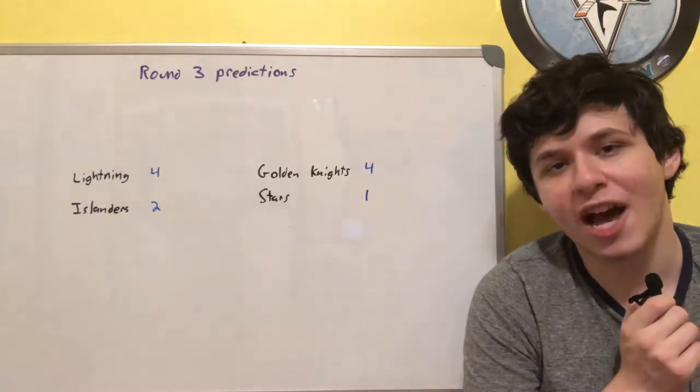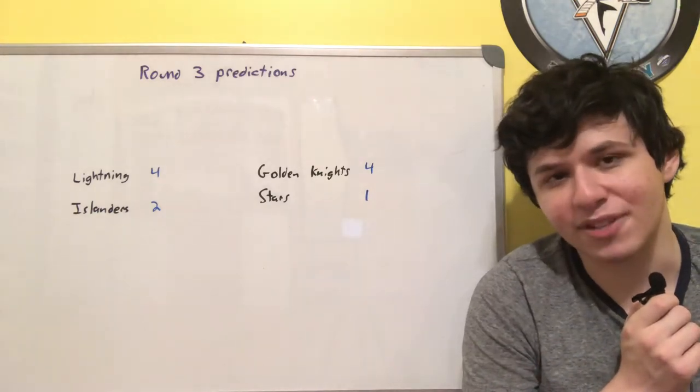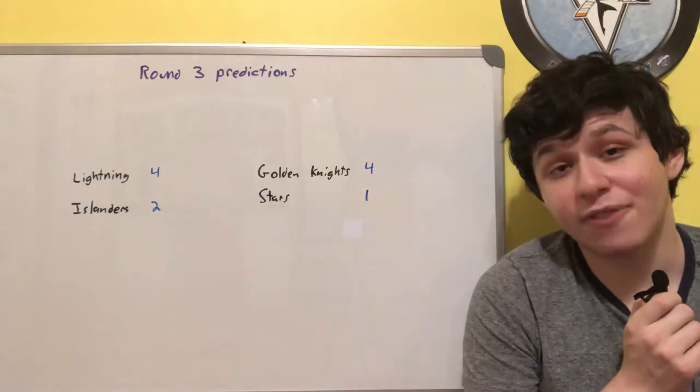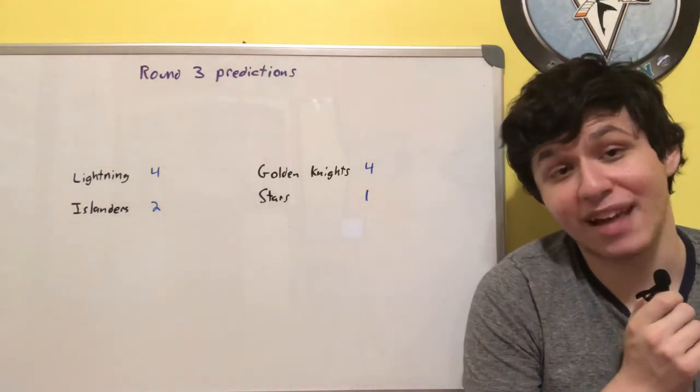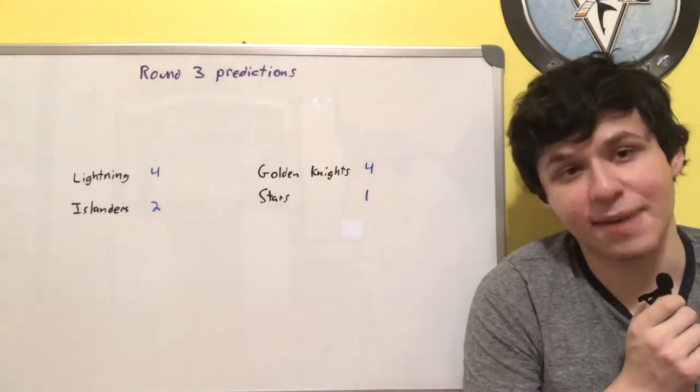On the Eastern Conference side we have the Tampa Bay Lightning versus the New York Islanders and on the Western Conference side we have the Vegas Golden Knights versus the Dallas Stars. Starting on the Eastern Conference side we have Lightning versus Islanders. My prediction for that series is a 4-2 victory for the Lightning, so a six-game series.